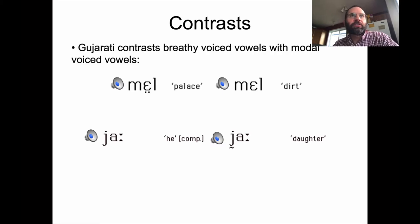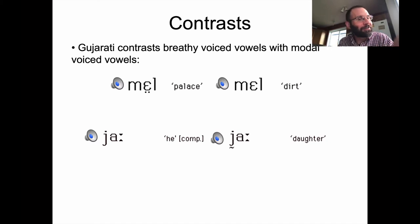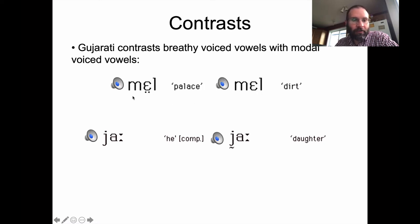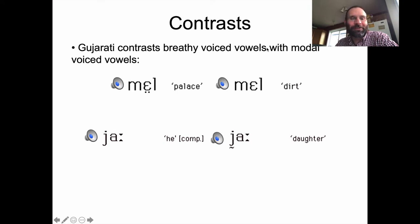There are languages in the world which contrast modal voiced segments with breathy voiced segments. Gujarati is probably the most widely spoken one — spoken on the west coast of India, but also in places like Canada. In Gujarati they have modal voiced vowels and breathy voiced vowels, which are transcribed with two dots underneath the vowel. The distinction is pretty subtle — I had a student once who studied Gujarati all semester and didn't pick up on it. But if you listen closely, it's there.